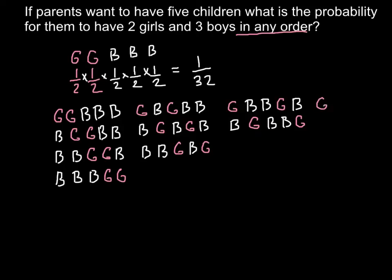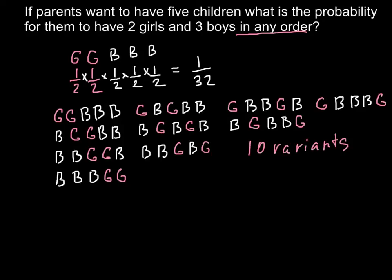With three boys between the girls, we would have: girl, boy, boy, boy, girl — just one variant. So as you see, we have four variants here, plus three variants, equals seven, plus two variants equals nine, plus one equals ten. So there are ten variants for a family of five children to have two girls and three boys in any order.